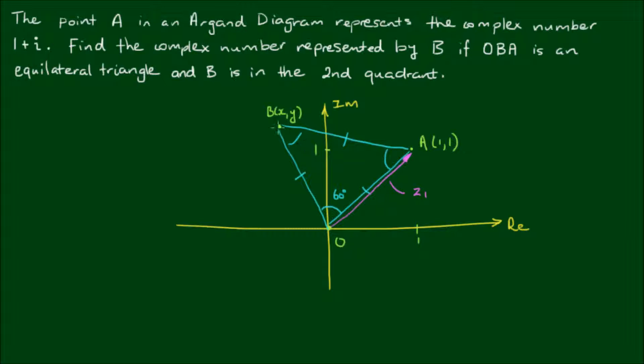And to get the coordinates of point B, all I have to do is rotate this vector Z1 by 60 degrees to form this dashed vector pointing to the coordinates of point B. And I can do this rotation through complex number multiplication.